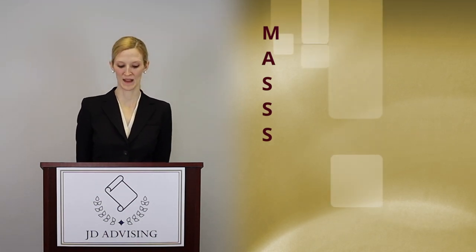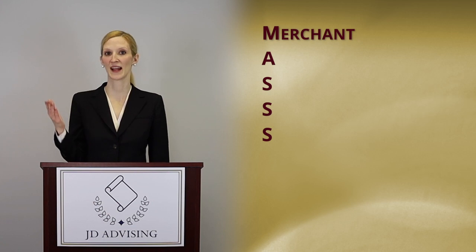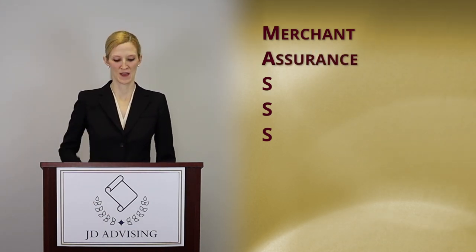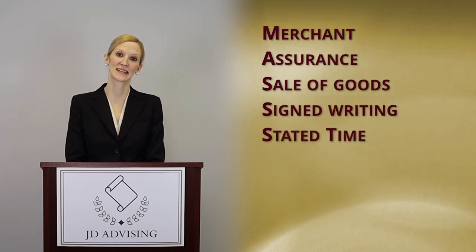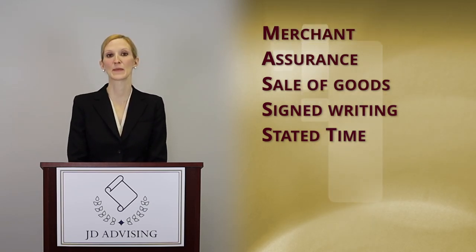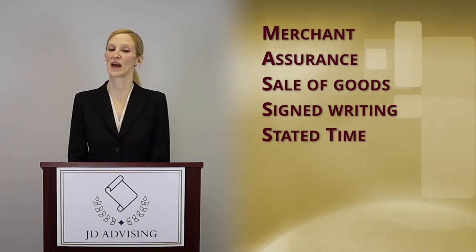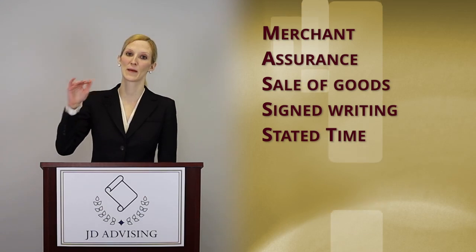A firm offer is just what it sounds like — it's an offer that is firm. That means it cannot be created and taken away at the offeror's discretion. Instead, the offeror has to hold open that offer for some period of time. The rule — using the mnemonic MASS — is: an offer may not be revoked if it is Made by a merchant or someone who deals in goods of that kind; it gives Assurances that it will be held open; it's a contract for the Sale of goods under the UCC; there is a Signed writing; and it's held open for a stated time or a reasonable time will be implied, but either way it cannot be held open for over three months.